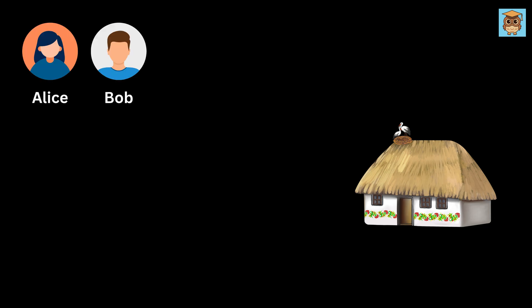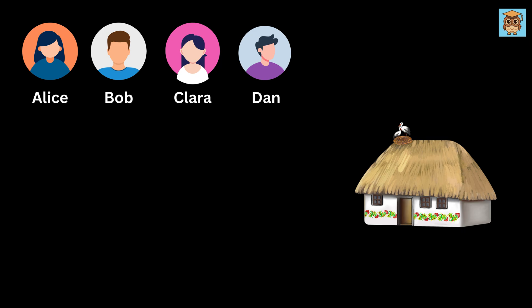In a village where everyone sleeps at different times, five friends - Alice, Bob, Clara, Dan, and Emma - each have a unique bedtime order.